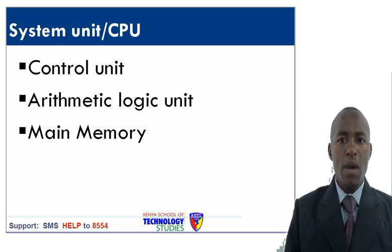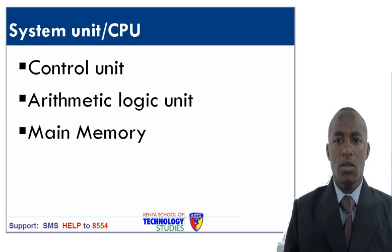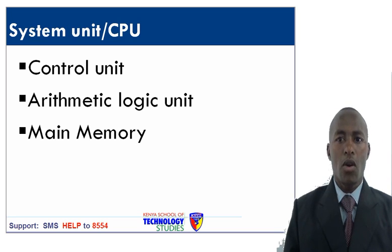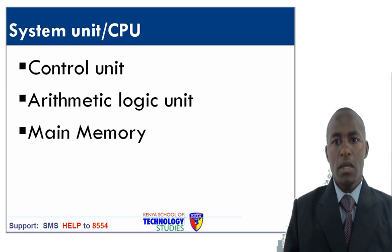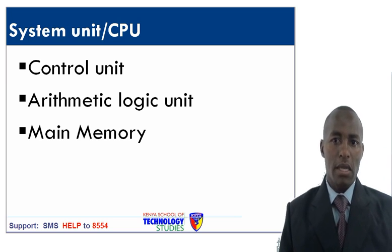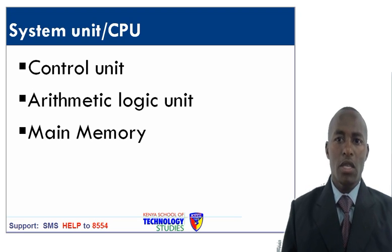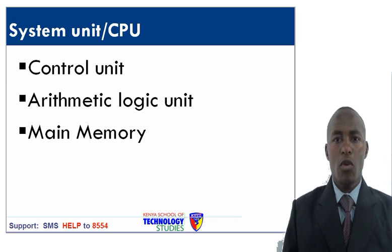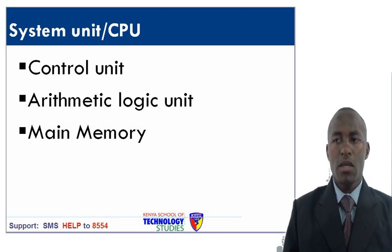The purpose of random access memory is to hold data either awaiting to be executed by the central processing unit, or holding data awaiting to be taken to its final storage location. ROM holds data permanently. Examples of data or instructions held in ROM are system programs, which are responsible for controlling all the hardware resources of the computer-based system.